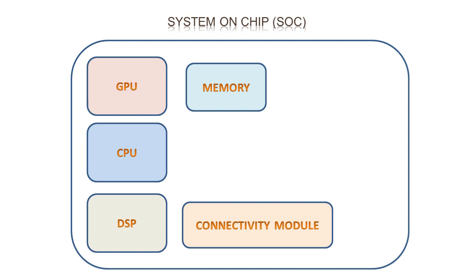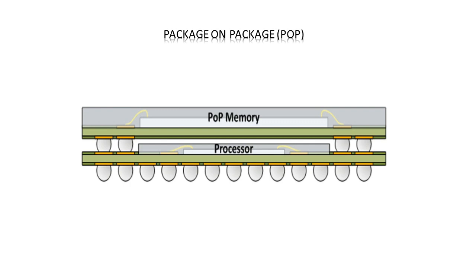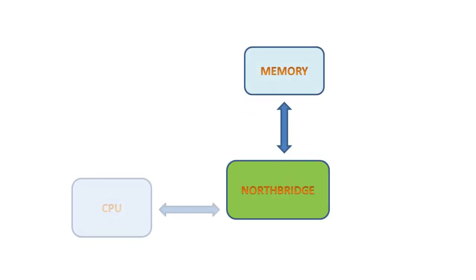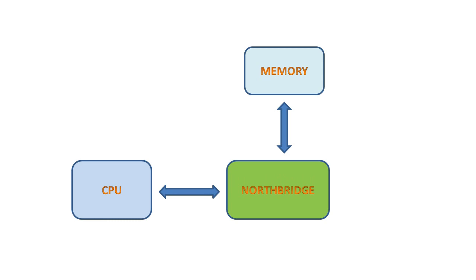Higher-end SOCs also contain modules for camera, location, security, and sensors. Sometimes due to size constraints, it is not possible to integrate RAM and ROM inside the SOC, so the memory package is stacked above the SOC package and connected using a ball grid array — an arrangement known as package-on-package, which reduces cost and size. When memory is outside the SOC, the connection between the CPU and memory is established by a module known as the North Bridge, which ensures connectivity between the RAM and CPU.